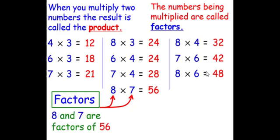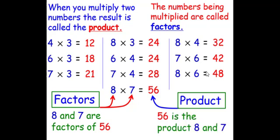So 8 and 7 are factors of 56. 56 is the product of 8 and 7.